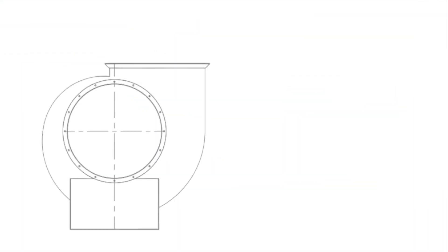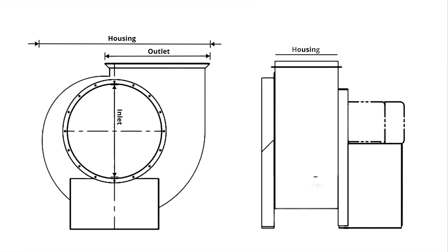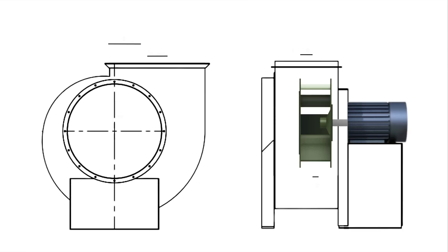Backward inclined fans get their name from the blade's backwardly inclined orientation relative to the wheel's rotation. These fans generate medium to high amounts of airflow at low to medium amounts of pressure. Capable of efficiencies of 80 to 90 percent, backward inclined fans are the most energy efficient of the centrifugal fan types. Some characteristics all backward inclined fans have in common are large inlet and outlet openings relative to casing size and wide casings relative to wheel width. In general, backward inclined fans are vulnerable to material in an airstream because material tends to build up on the back side of the blades, which can cause imbalance.